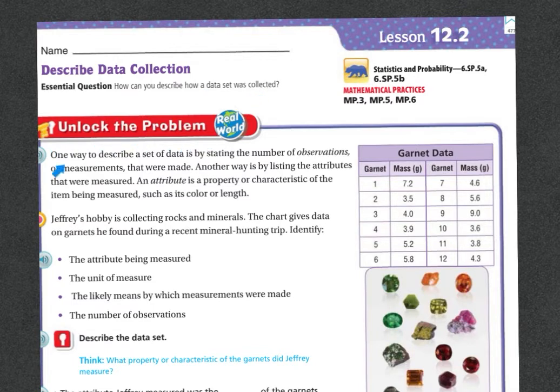Let's unlock the problem. One way to describe a set of data is by stating the number of observations or measurements that were made. Another way is by listing the attributes that were measured. An attribute is a property or characteristic of the item being measured, such as its color or length.